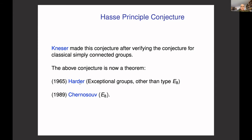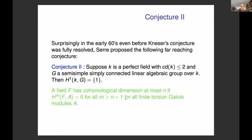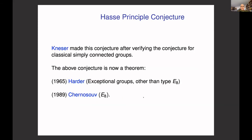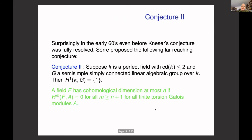The theorem is due to Harder for the exceptional groups other than E_8, and it took almost another 20 years to complete the conjecture for the case of E_8 — this result is due to Chernousov. I want to say that I am focusing on simply connected groups, but there is a whole literature on the Hasse principle for more general reductive or even connected linear algebraic groups, finding obstructions like the Brauer–Manin obstruction and proving finiteness theorems. For many of these further results, this basic Kneser conjecture — now a theorem — is fundamental.